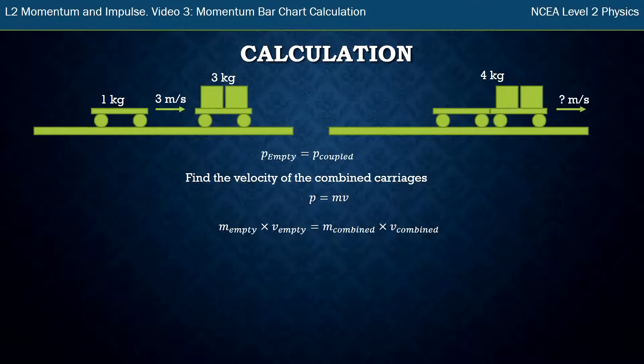All I've done is taken my equation from my bar charts and substituted where it said momentum, which is P, for mass times velocity for each one. Now I know the mass of the empty one, I know the velocity of the empty one—it's one and three. I know the combined mass—it's four—I don't know the combined velocity, but now I've just got one times three equals four times V. Three over four is 0.75 and that's my combined velocity.